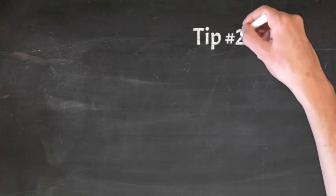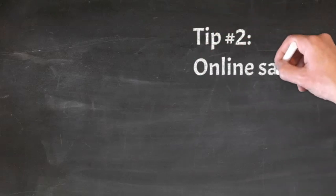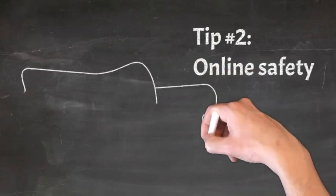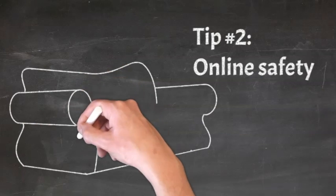Tip number two: talk to your children about online safety. Explain the risks of talking to strangers online and encourage them to come to you if they encounter anything that makes them feel uncomfortable.